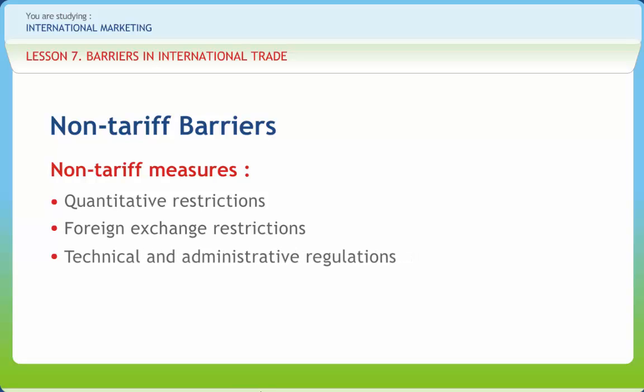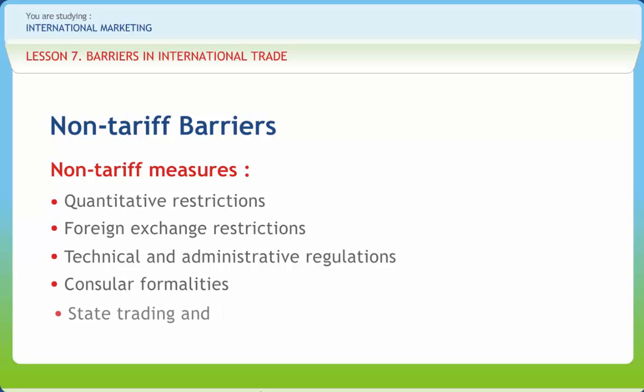Third is Technical and Administrative Regulations — another measure to regulate imports is the imposition of certain standards of technical production and technical specification to which an importing commodity must conform. Fourth is Consular Formality — if documentation is faulty or not drawn in the language of the importing country, heavy penalties are imposed and fees charged for such documentation are quite heavy. Fifth is State Trading — in most socialistic countries, import and export transactions are exclusively handled by certain state agencies, with separate agencies set up for each class of products.